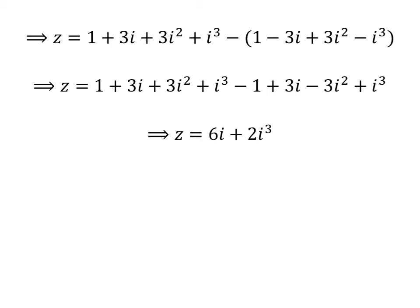Putting like terms together, we get Z is equal to 6 times i plus 2 times cube of i. We can rewrite cube of i as square of i times i.